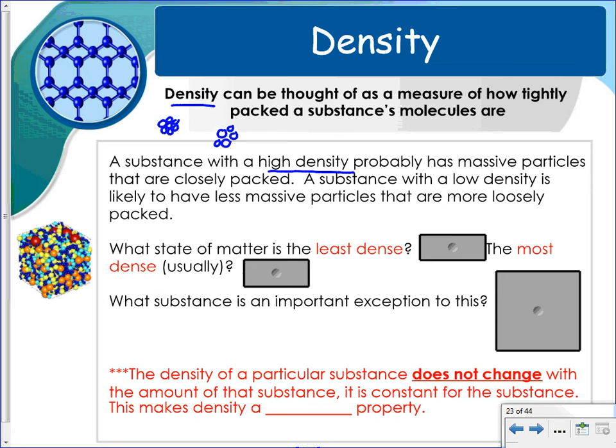A substance with a high density has massive particles that are closely packed, and a substance with a low density is likely to have less massive particles that are more loosely packed.